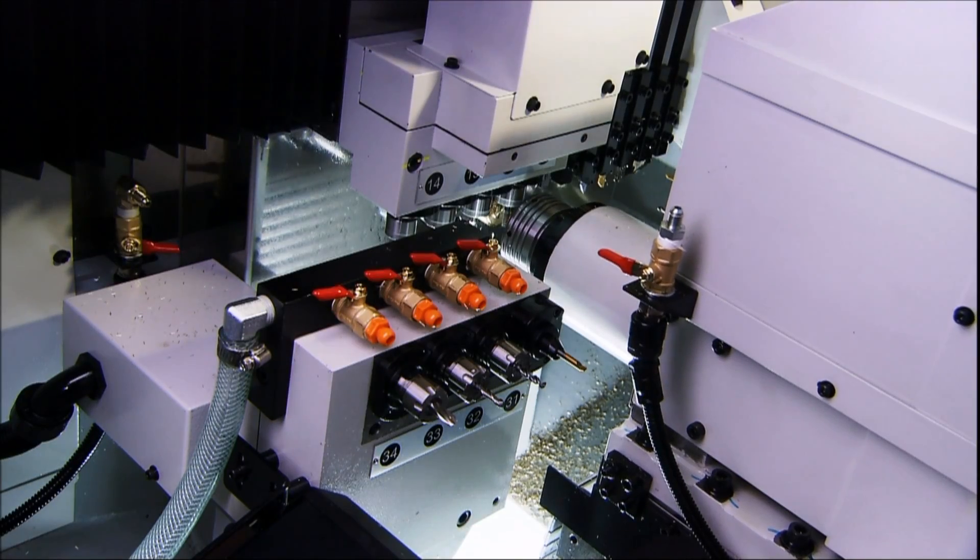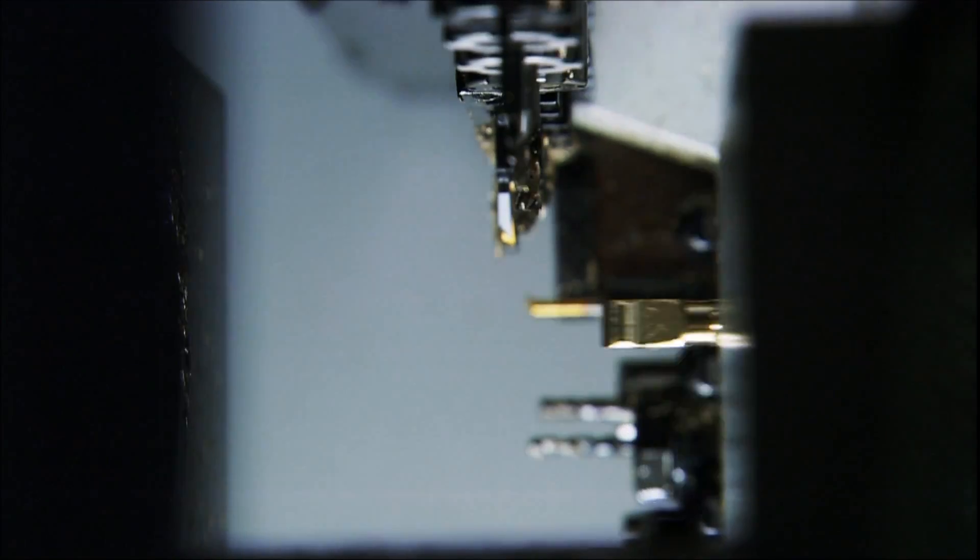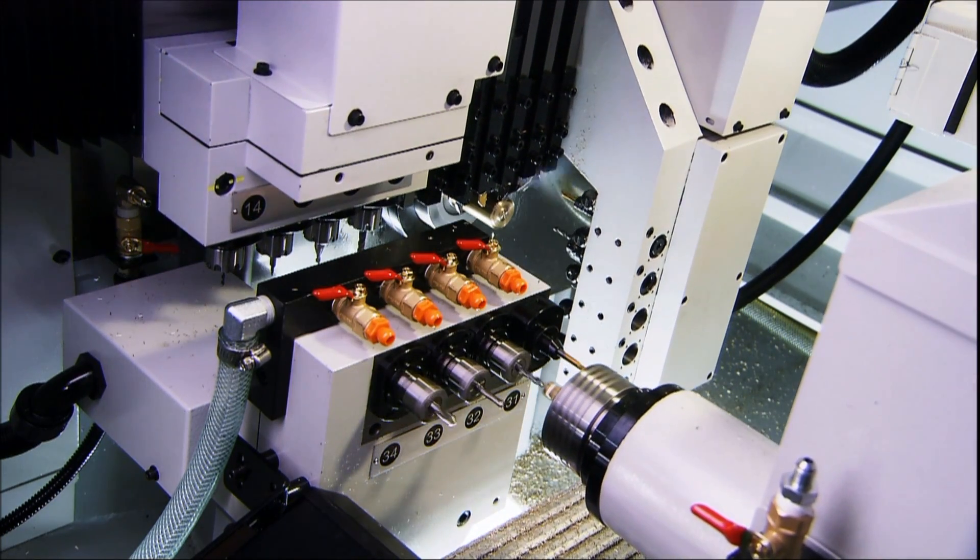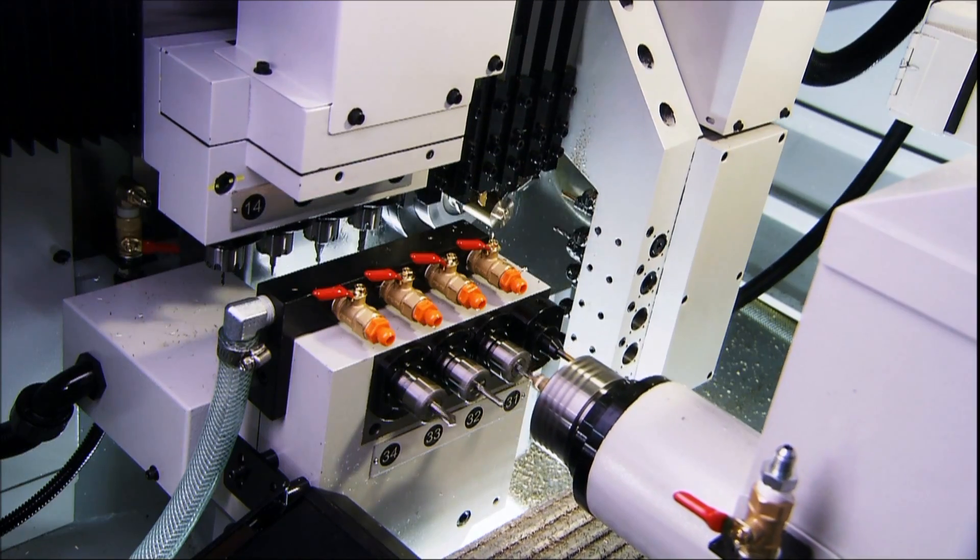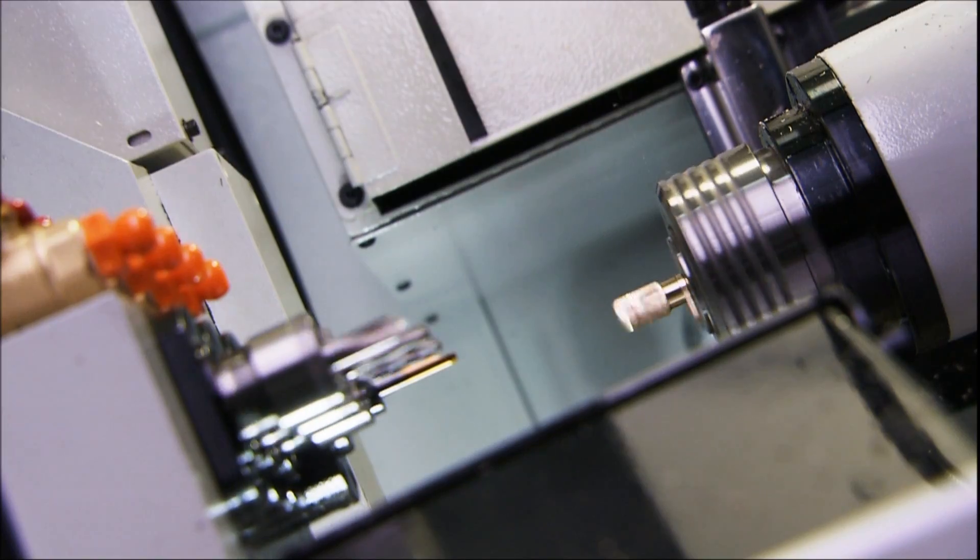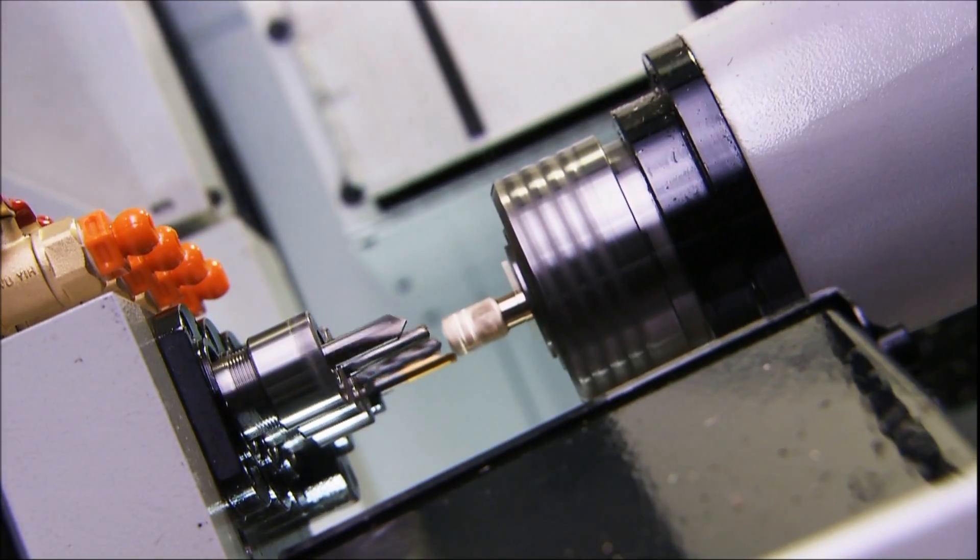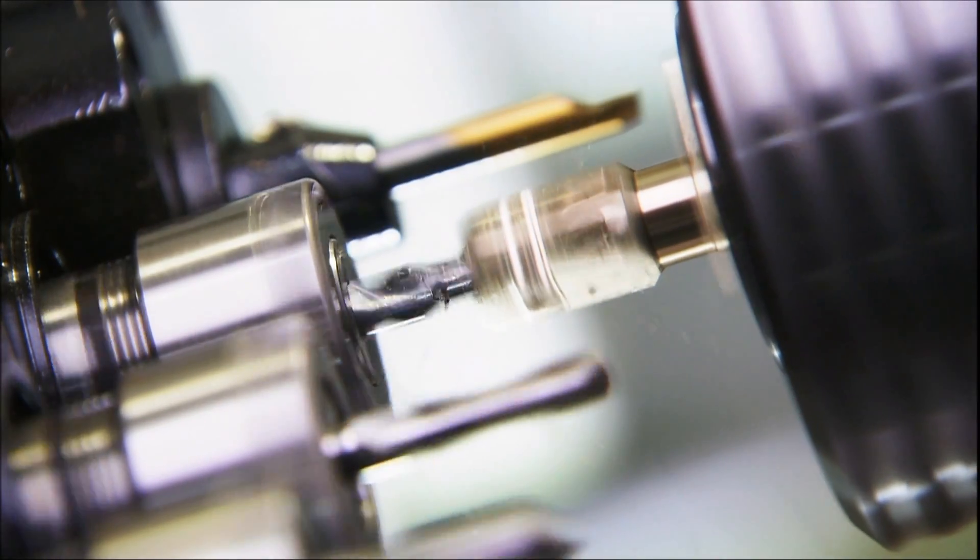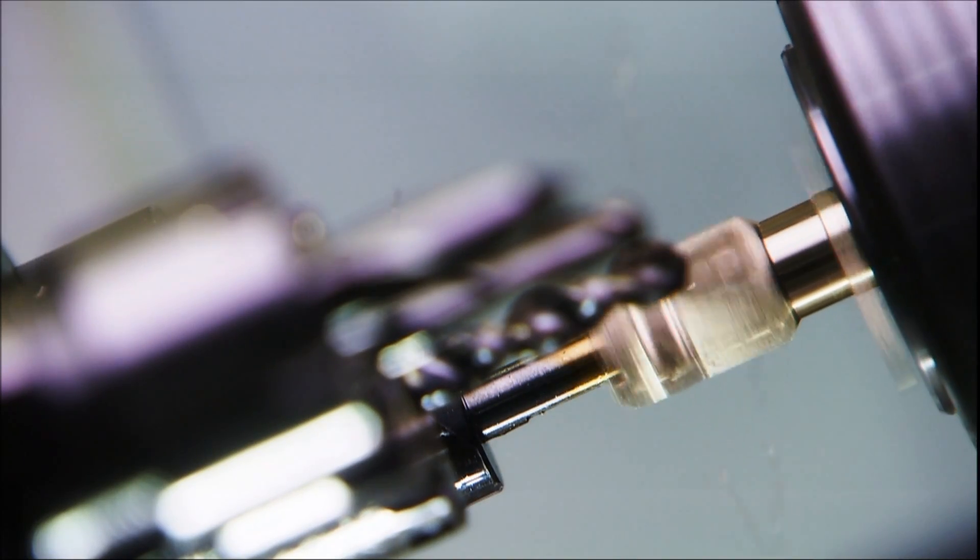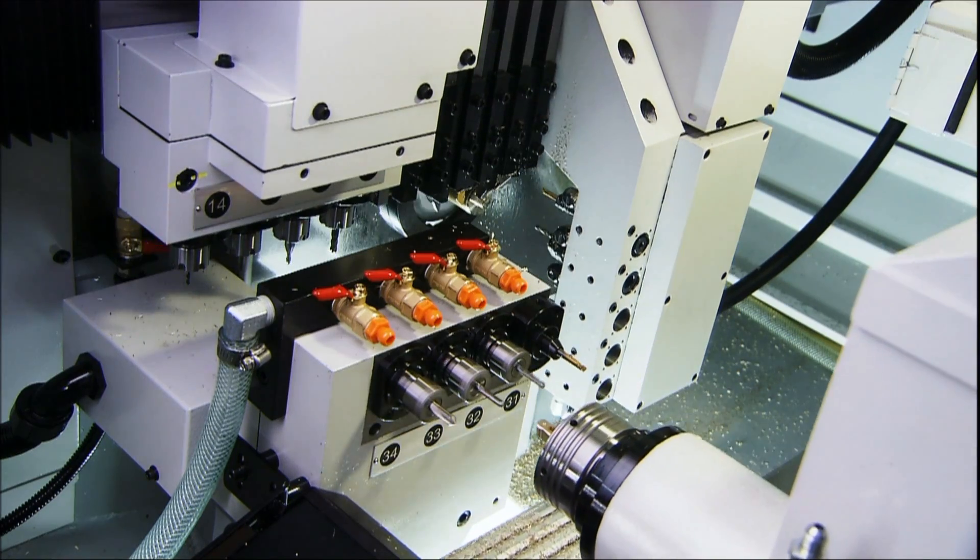When the main spindle completes a workpiece and passes it to the sub-spindle for back machining, the main spindle can start the next workpiece. This eliminates the need for multiple machines, increases production throughput, and reduces setup times and manpower, because all functions are performed in one machine.